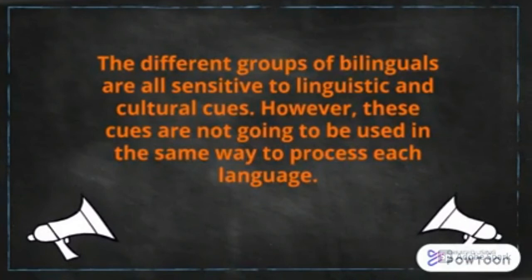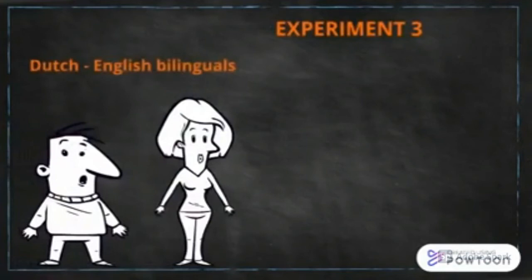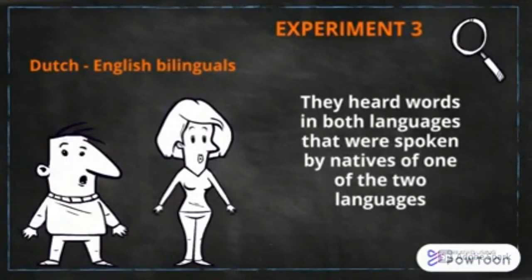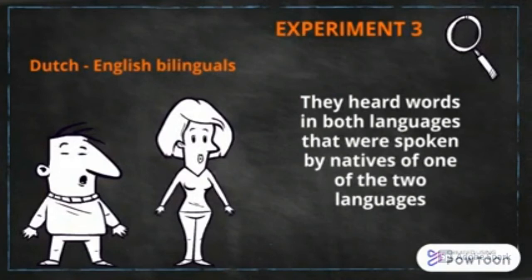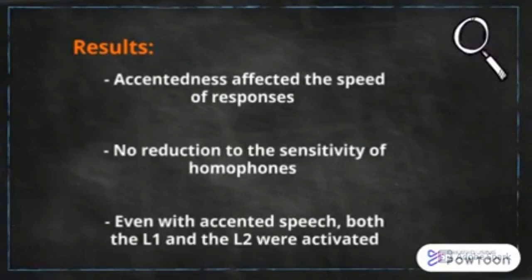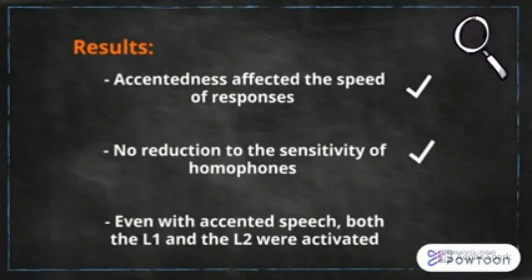In an experiment, a group of Dutch-English bilinguals had words in both languages, Dutch and English, that were spoken by native speakers of one of the two languages. This experiment showed us three things: first, that the accentedness of the speaker affected the speed of responses of bilinguals; second, that there was no reduction to the sensitivity of homophones — that is to say, words that sounded similar in both languages were processed at a normal speed; and third, that even with accented speech, both the L1 and the L2 were activated in the bilingual brain.